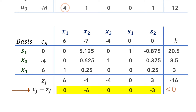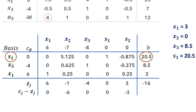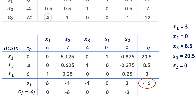Since there is no positive value in the net evaluation row, the objective function cannot be improved further. We have an optimal solution: x1 equals 3, x2 equals 0 (non-basic), x3 equals 8.5, s1 equals 20.5, and s2 equals 0 (non-basic). The objective function value for the maximization problem is negative 16. Since this is a minimization problem, we multiply by negative 1, giving an optimal objective function value of positive 16.